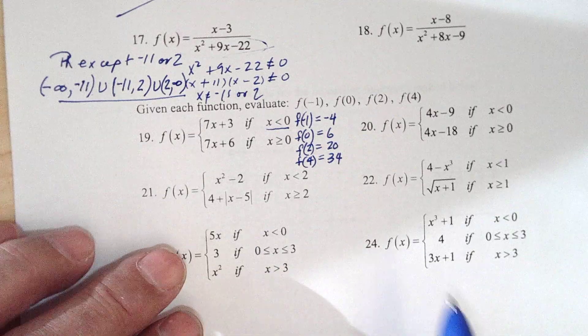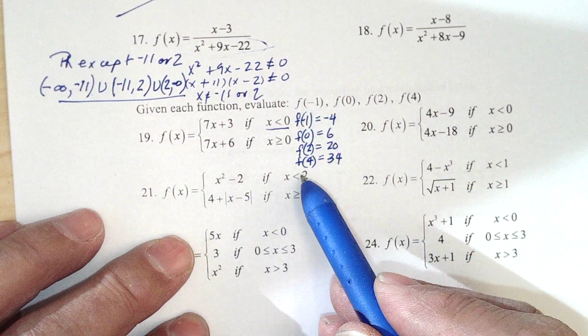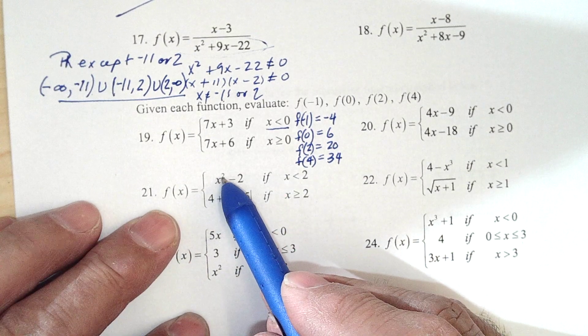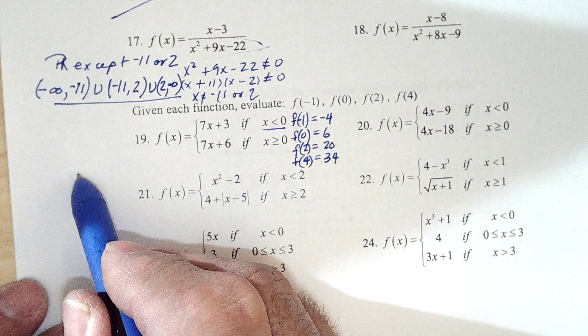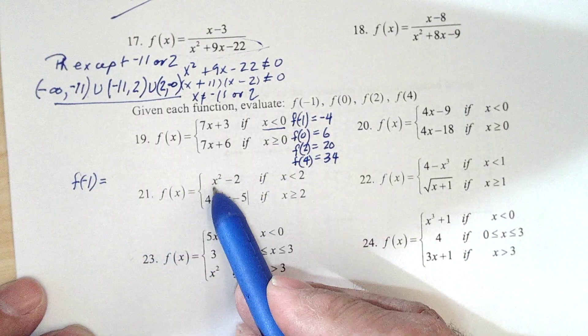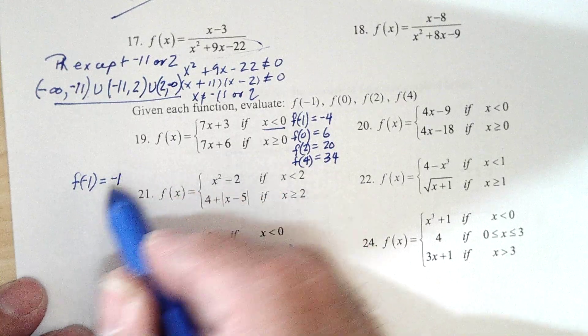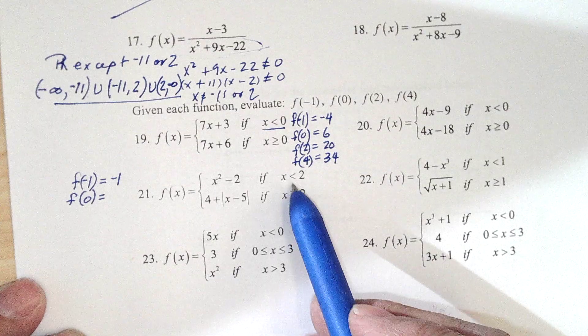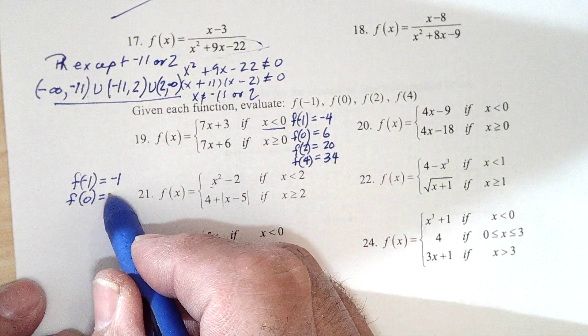All right. Supposed to do it again with this one. Minus 1 is in this window, so negative 1 squared is 1, minus 2 is negative 1. So f of minus 1, negative 1, 1 minus 2 is minus 1. f of 0, 0 is in this window, so 0 squared minus 2 is negative 2.